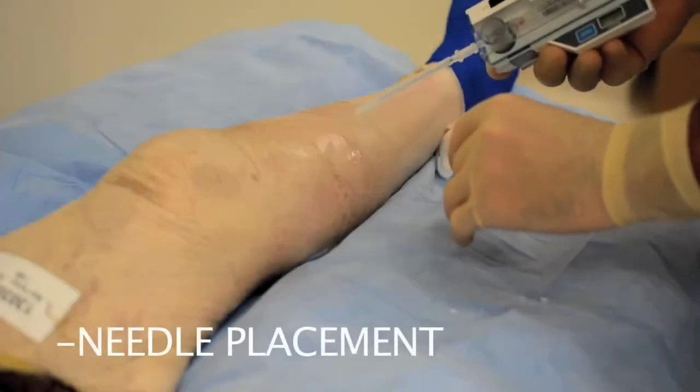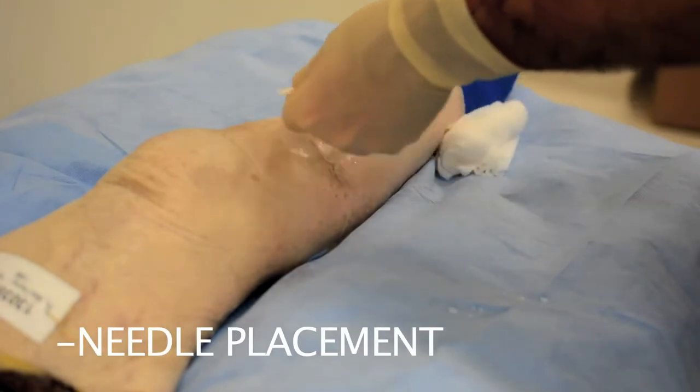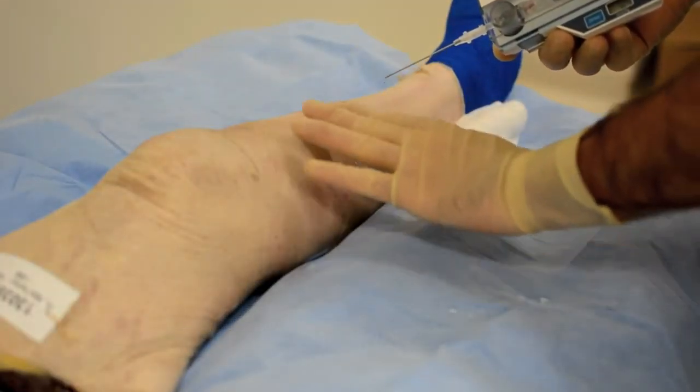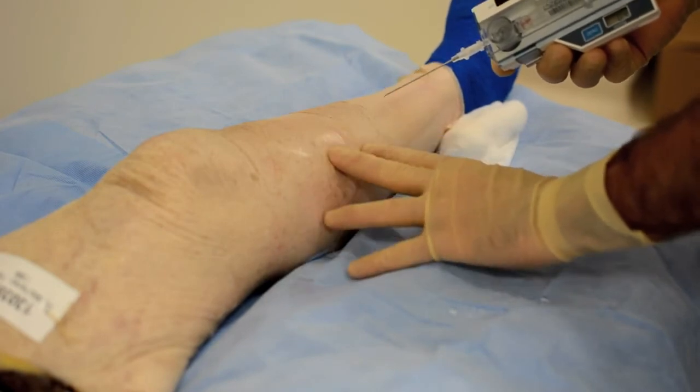The next step is placement of the needle into the compartment. With your sterile hand, you will remove the needle covering. You have already prepped this area out. You will palpate the compartment. You tend to check first.